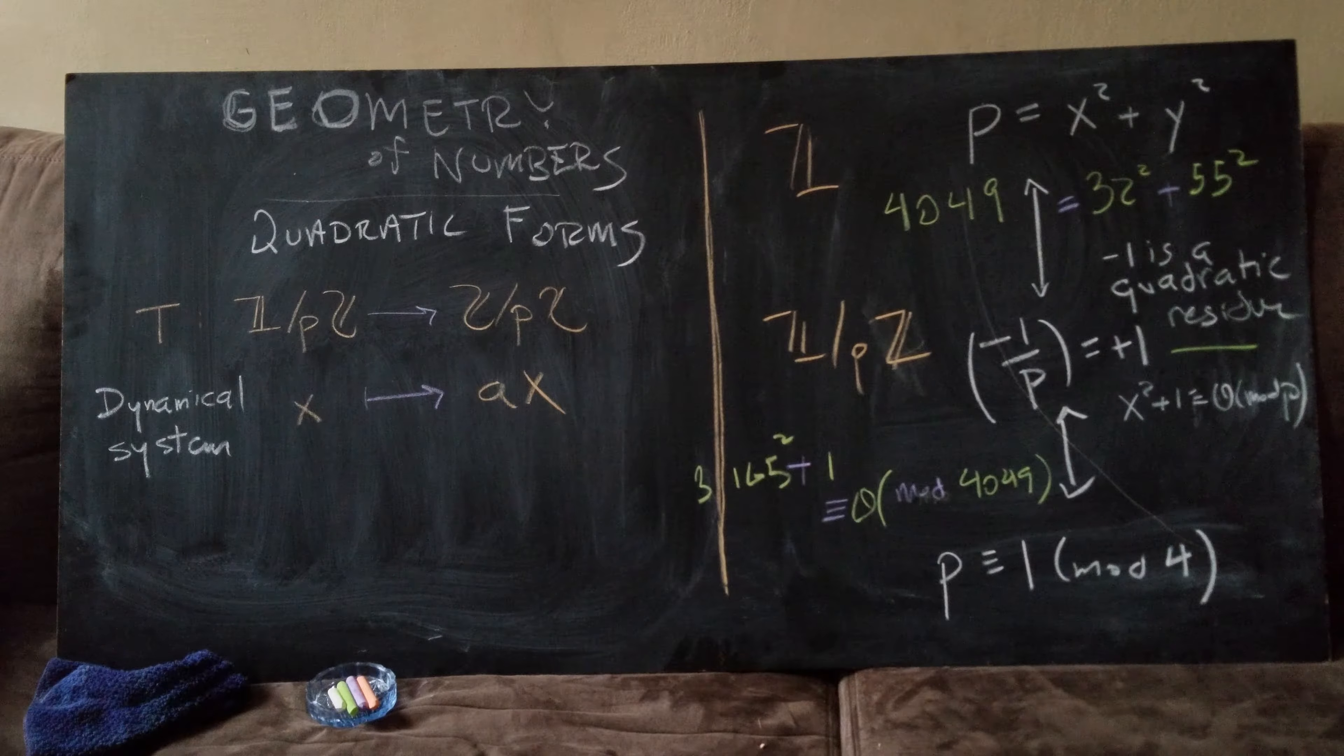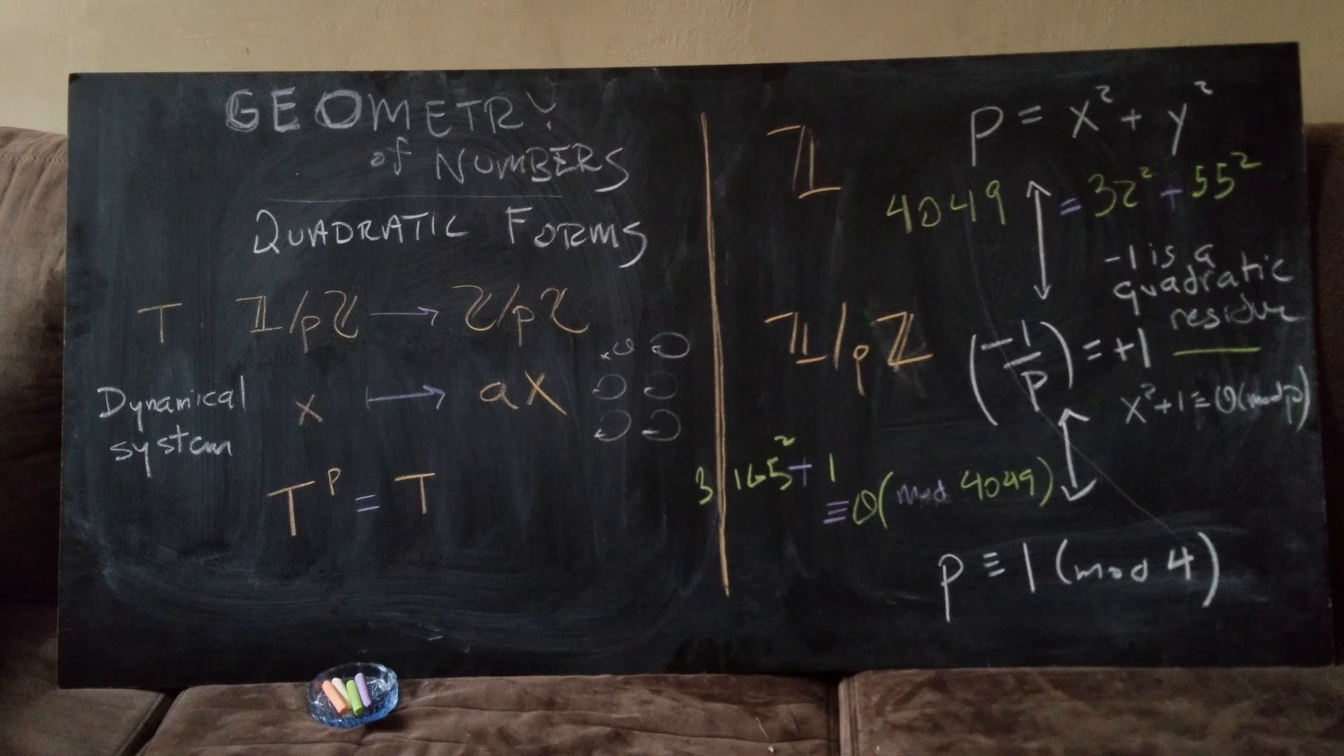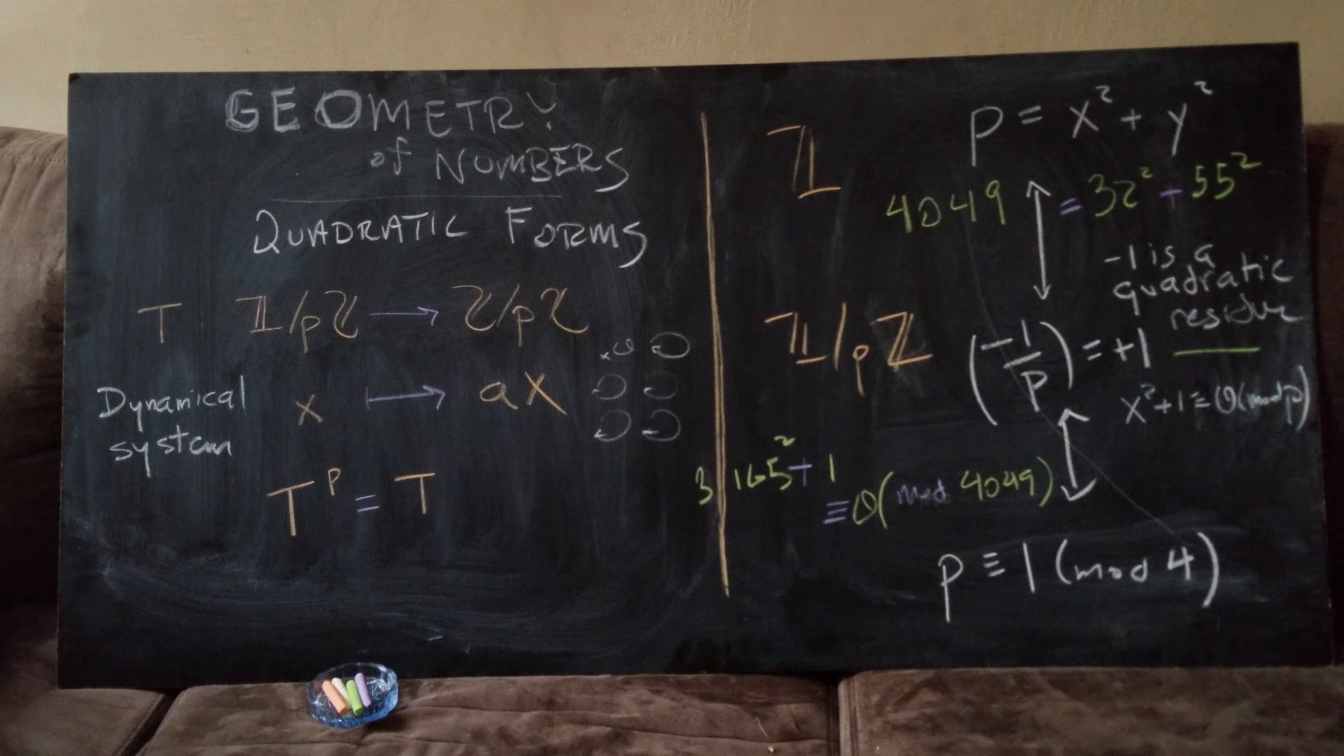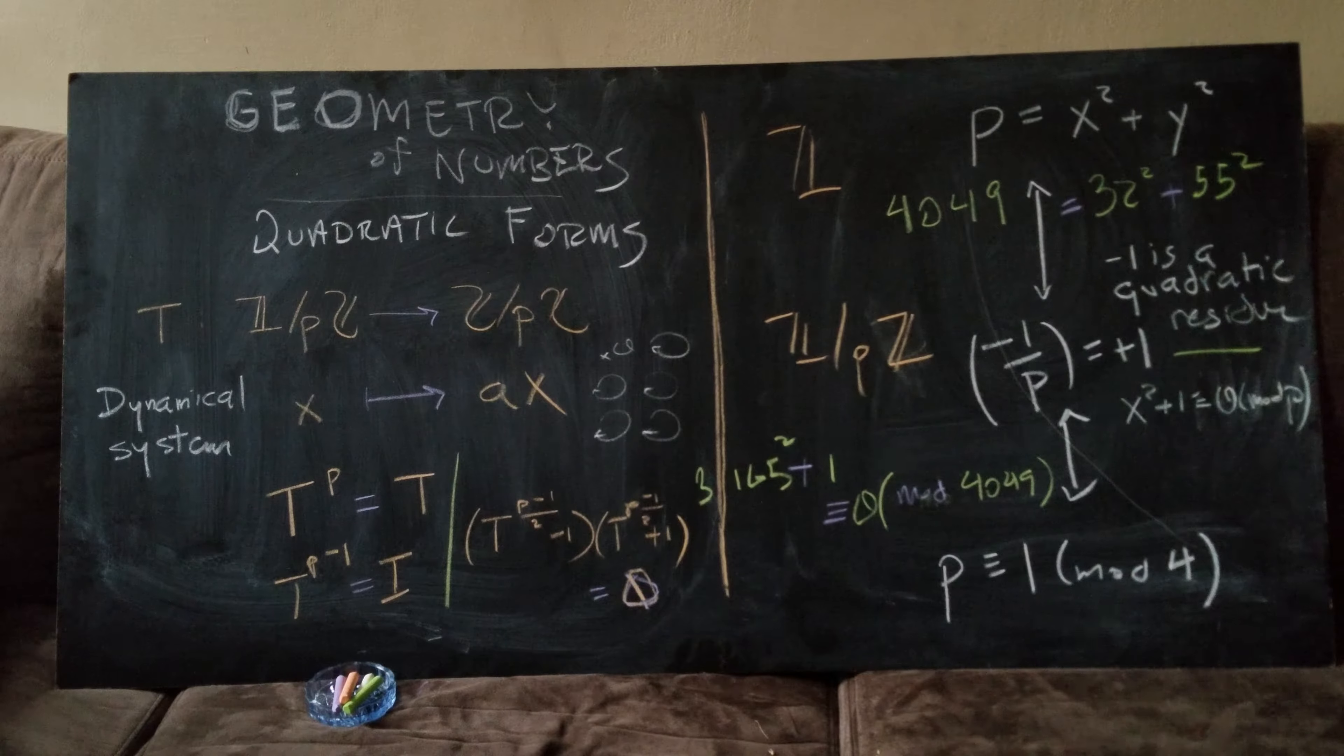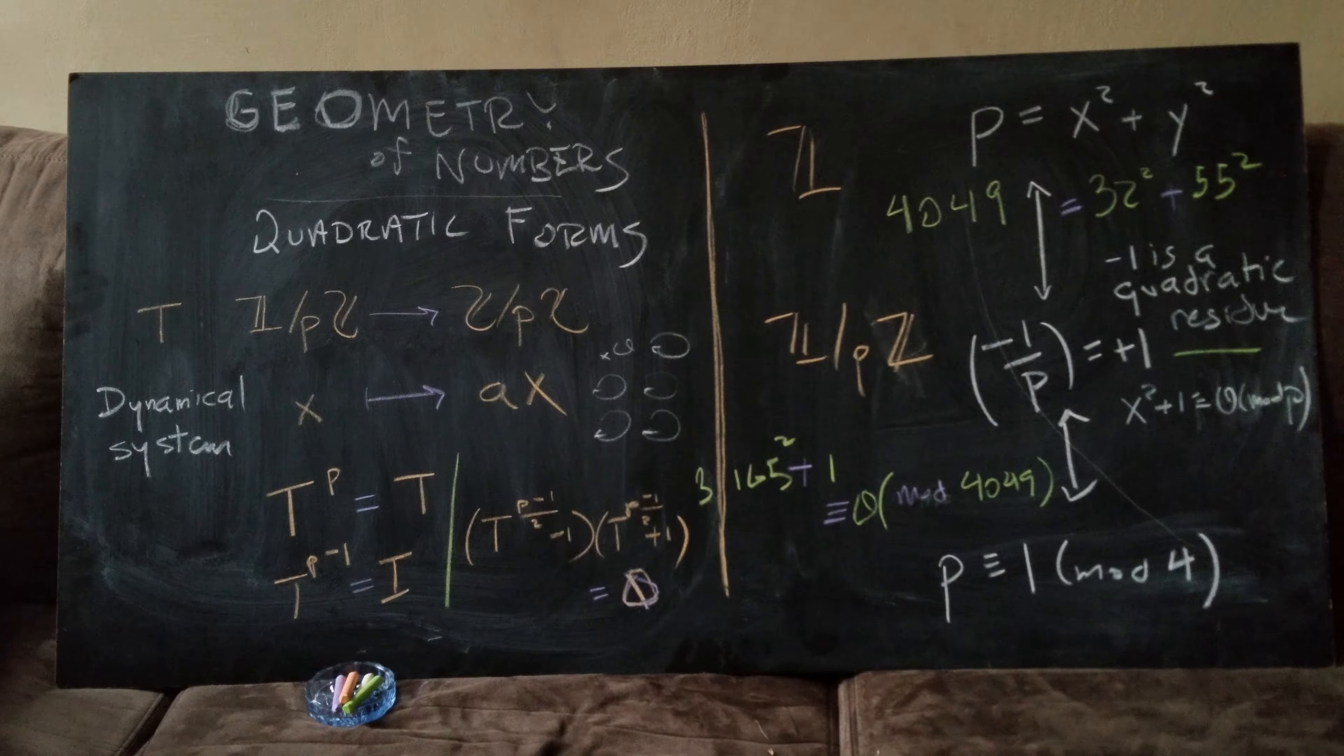So if you run this operator, run this action p different times, you wind up with T itself, or if you're on a p minus one times you should wind up with the identity. So this operator kind of factors in a way, T to the p minus one over two.